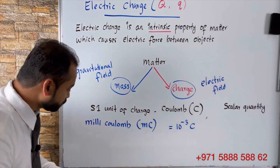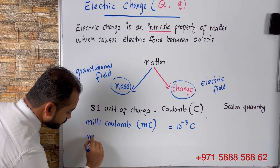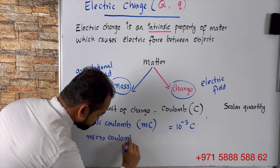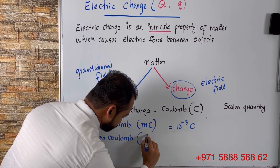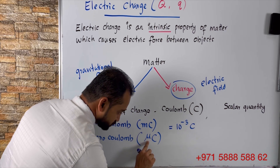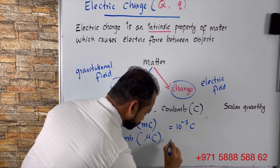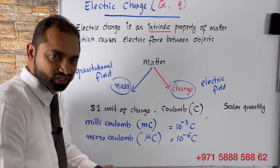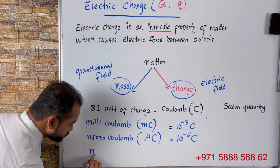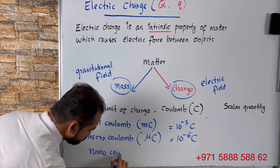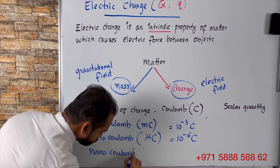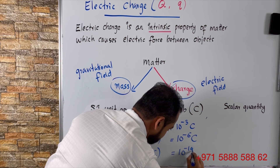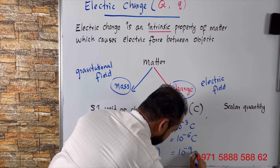If the charge is even smaller, we use microcoulomb. To represent smaller charges, we use millicoulomb or microcoulomb. The symbol represents micro and C represents coulomb. Microcoulomb is equal to 10 to the power negative 6 coulomb. And if the charge is even smaller, we use nanocoulomb. Nanocoulomb represents 10 to the power negative 9 coulomb.